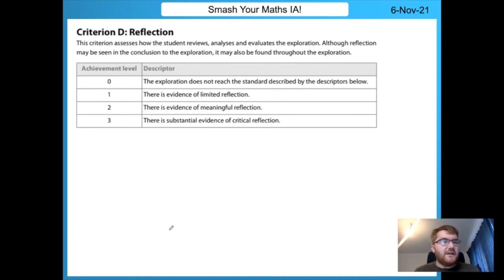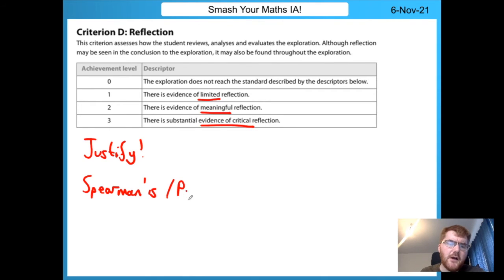Reflection is often one of the worst criteria completed by students because they struggle to go beyond limited reflection and go on to meaningful reflection and substantial evidence of critical reflection. The word I'm going to write here is justify. Every time you do a piece of mathematics, you need to justify why you did it. For example, if you're looking at whether to use an arithmetic mean or a geometric mean, why? If you use a cumulative frequency diagram, why did you use that? Why did you not use a box plot? If you're on the AI course and looking at Spearman's, this is a classic, Spearman's and Pearson's. Why did I use Spearman's? Why did I use Pearson's? What does it tell me about the data? Talk about linear and non-linear, for example. You have to justify as you go along. One of the worst things you can do is leave all your justification to the conclusion. You need to show justification as you go through the IA.